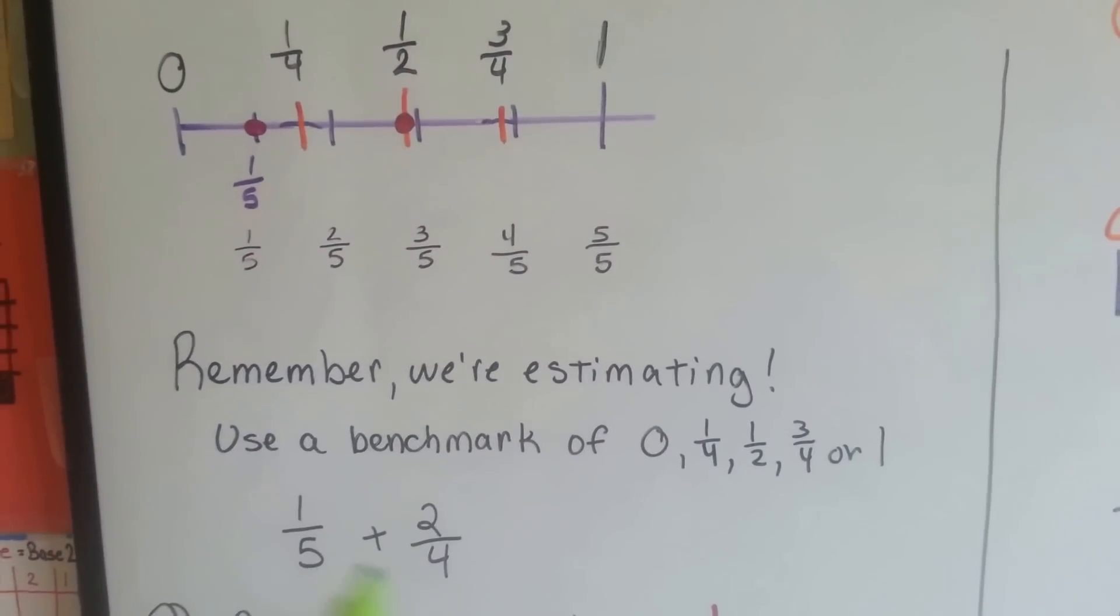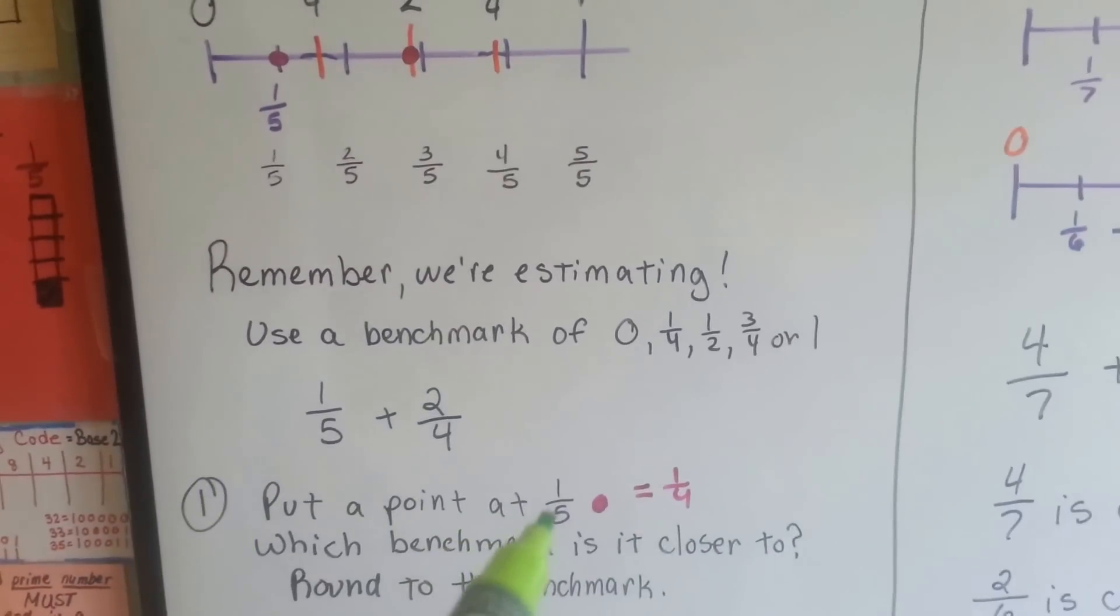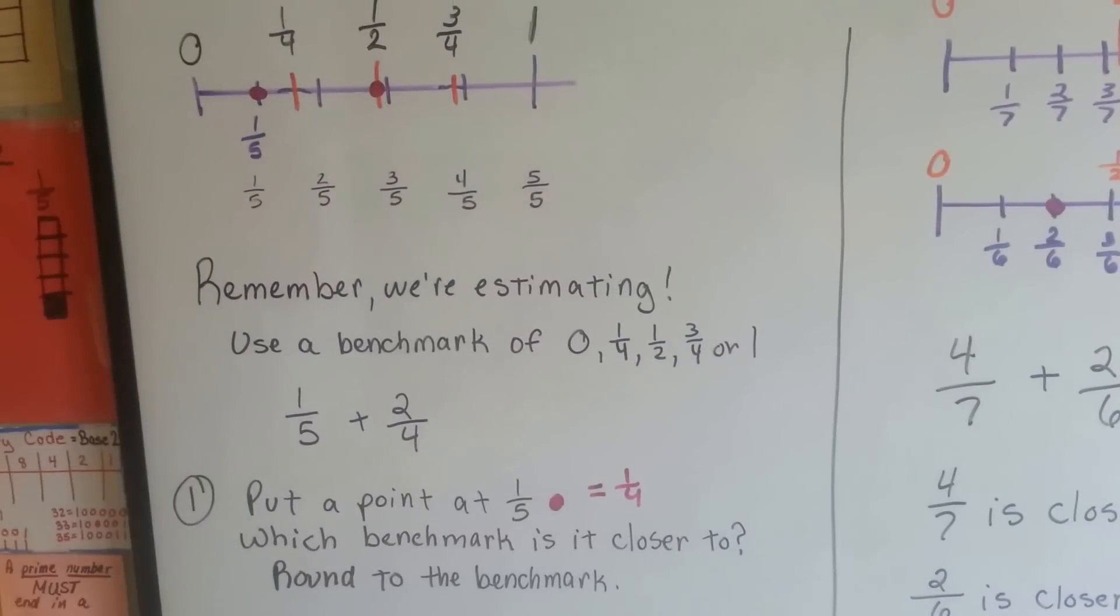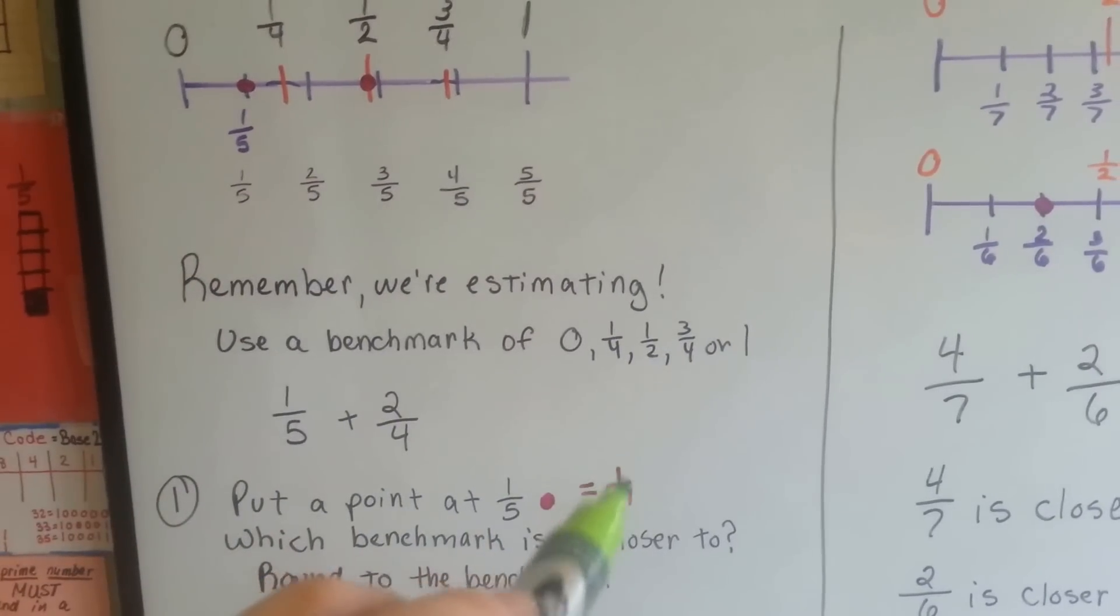If we're adding these two numbers together, the first thing we do is put a point at the 1 fifth spot and ask ourselves which benchmark is it closer to? It's closer to the fourth, so that's going to be our first rounded number.